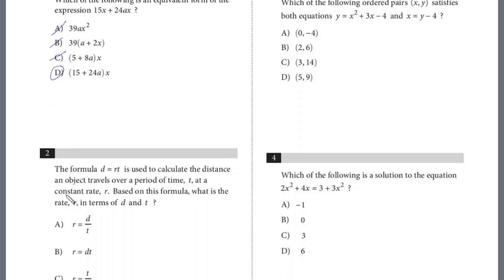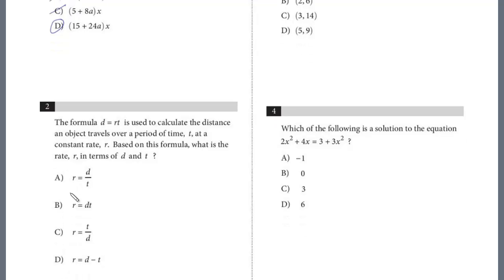Let's take a look at question number 2. The formula D equals RT is used to calculate the distance an object travels over a period of time T at a constant rate R. Based on the formula, what is rate R in terms of D and T? So, here's the formula. And we see this question a lot. We want to solve for R, right? R in terms of, so we isolate R.